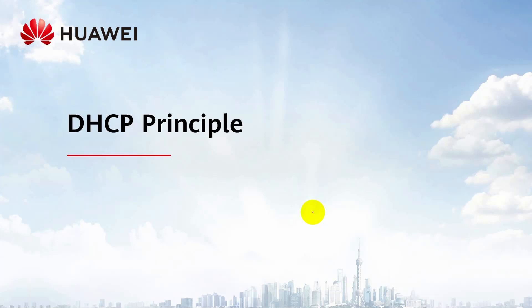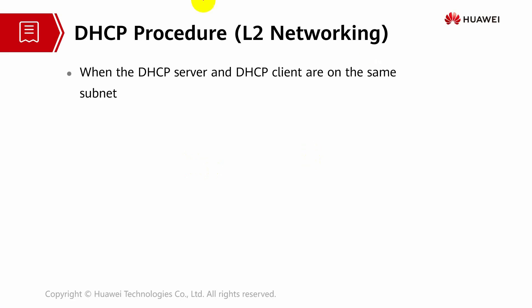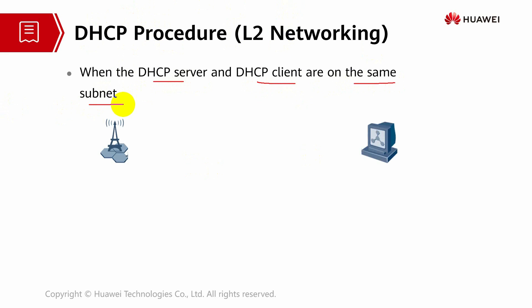Hello, I'm Punita from Huawei Global Training Center. Today we're going to discuss DHCP Principle Part 2 - the DHCP procedure based on L2 networking. This covers the scenario where the DHCP server and DHCP client are on the same subnet, and this principle works without a DHCP relay agent.